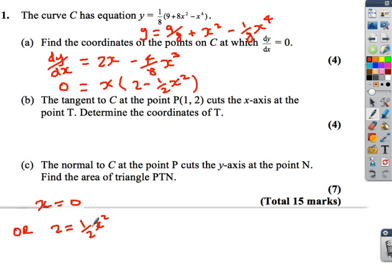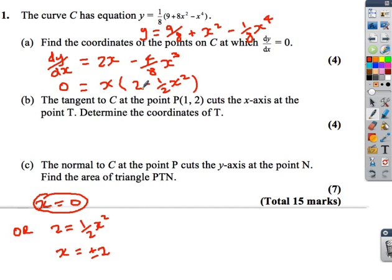If we solve 2 equals half x squared, we're going to get x equals plus or minus 2. So we've got three different possible solutions. When x is 0 the first factor is 0, and when x is plus or minus 2 the bracket 2 minus half x squared is 0.